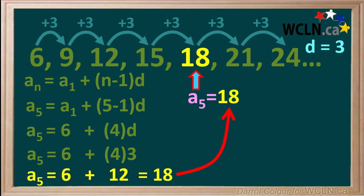So using the equation has given us the correct value for term 5, which is 18.